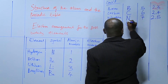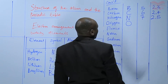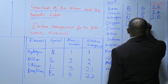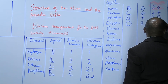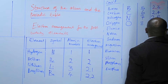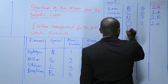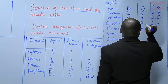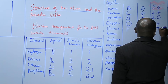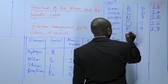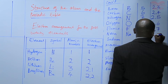Oxygen - the symbol is O, the O should be capital. The atomic number is 8. Electron arrangement is 2, then 6. So 2 electrons in the first energy level, then 6 in the second. Fluorine is F, atomic number 9. The electron arrangement is 2, then 7. Neon - Ne, atomic number 10. Arrangement is 2, then 8.